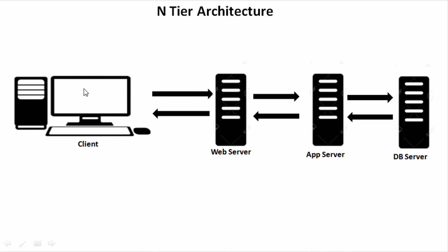Now as a user you enter your username, enter the password, and click the login button. A request is sent to the web server, then the app server, but this time it fires a query on the database to retrieve your actual username and password. It compares those with what you entered on the front end, and if correct, it builds your wall and sends the response back to you. This is how a typical web application architecture works — all servers coordinate and communicate with each other.